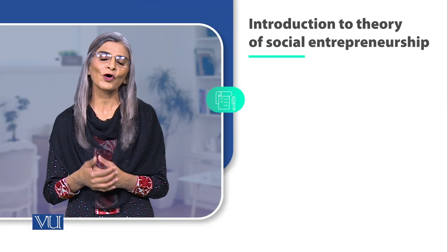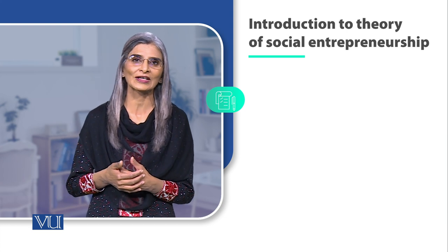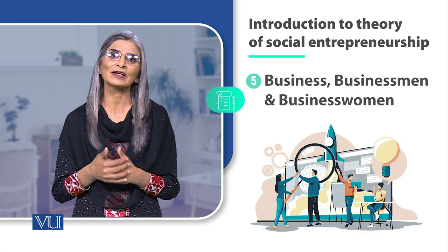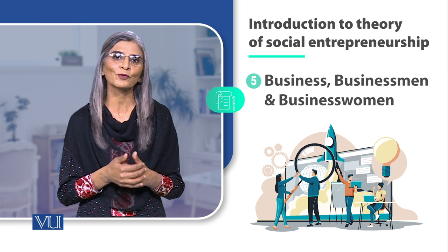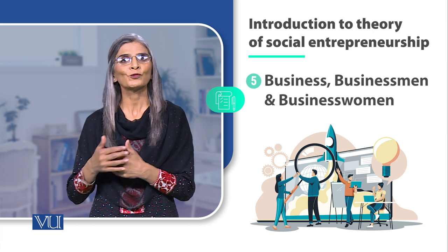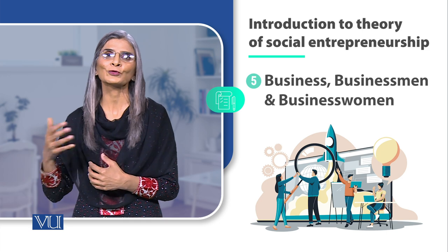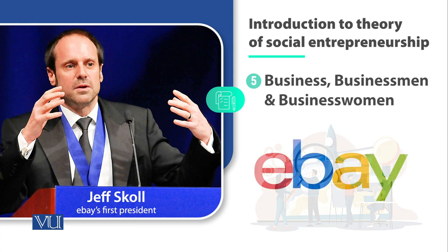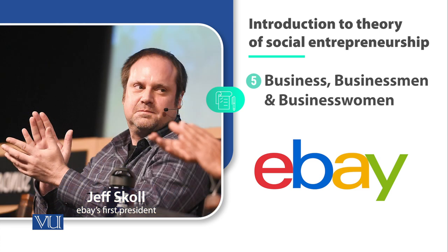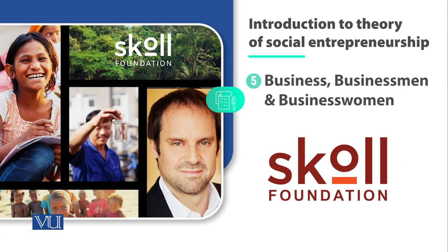Journalism के बाद एक और source जो social entrepreneurship की text के हवाले से आता है, वो businesses और business men and women हैं — वो लोग जो अपने business में कामयाब हैं, profit कमा रहे हैं, और फिर किसी stage पर वो society को return करने का और social impact create करने का सोचते हैं। जैसे Jeff Skoll की example है, जो eBay के first president थे। As a business person बहुत कामयाब, वहाँ से switch किया, 1999 में Oxford University में Skoll Foundation की बुनियाद रखी, जो social entrepreneurship के material और theory को document करने के हवाले से important role कर रही है।